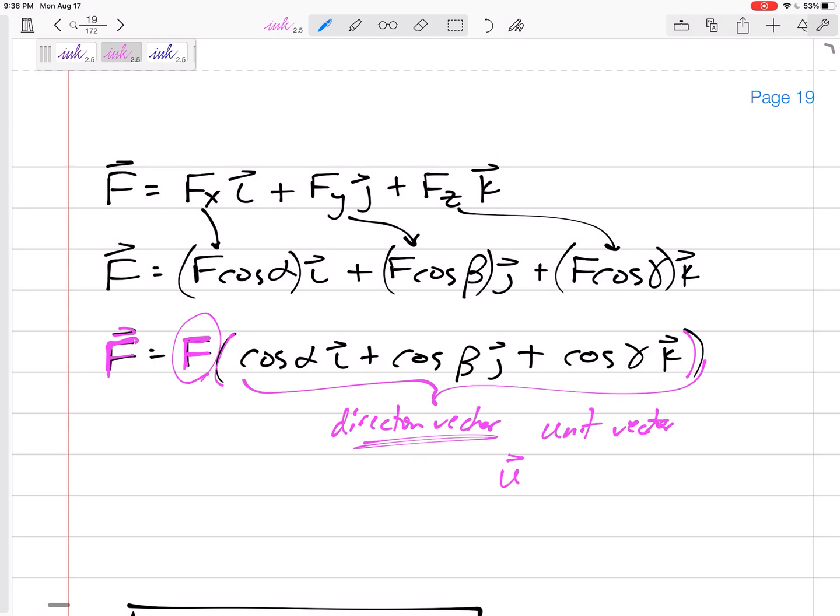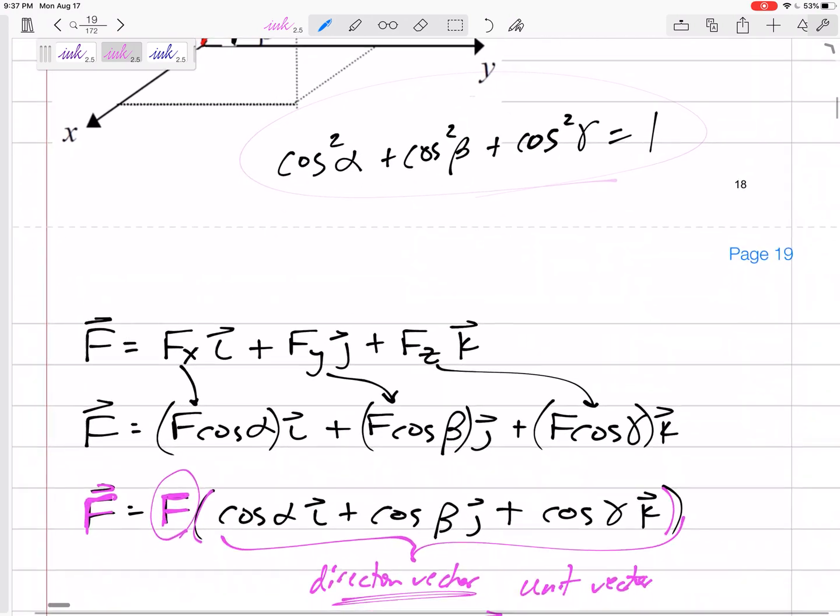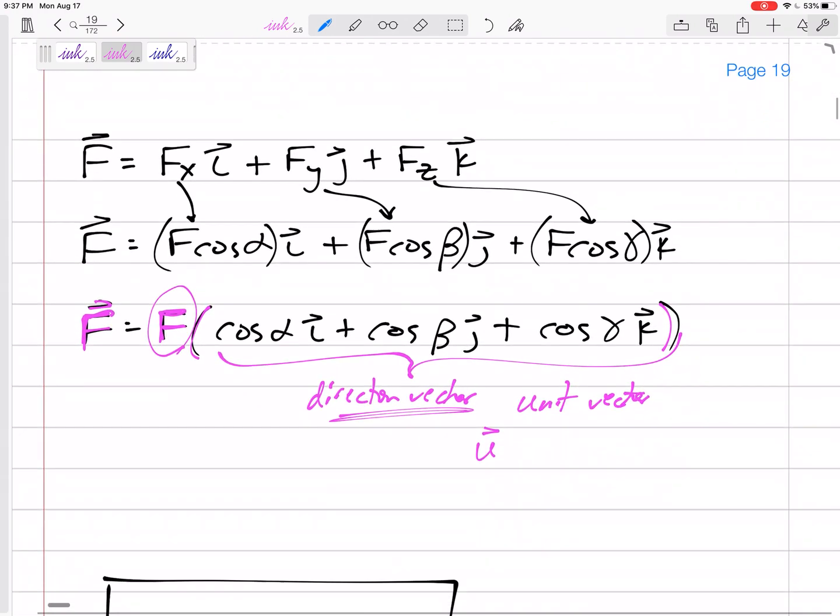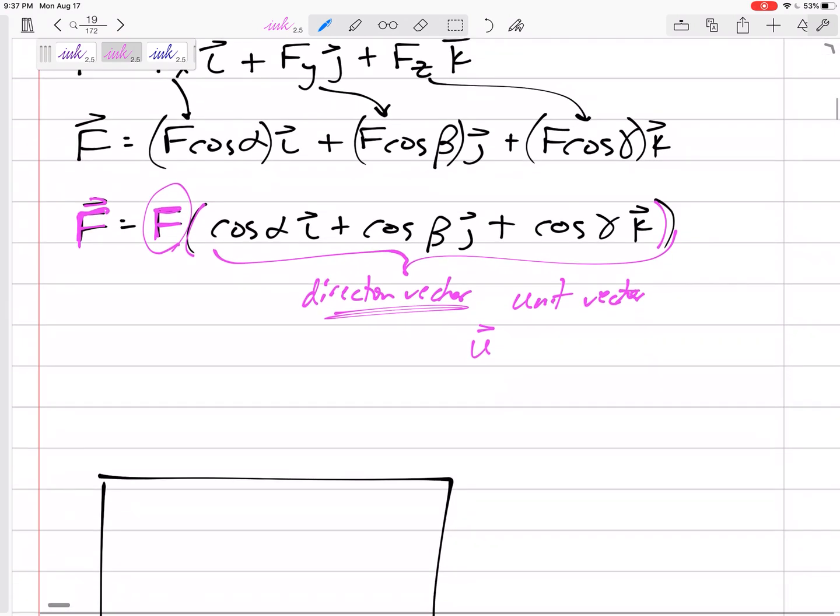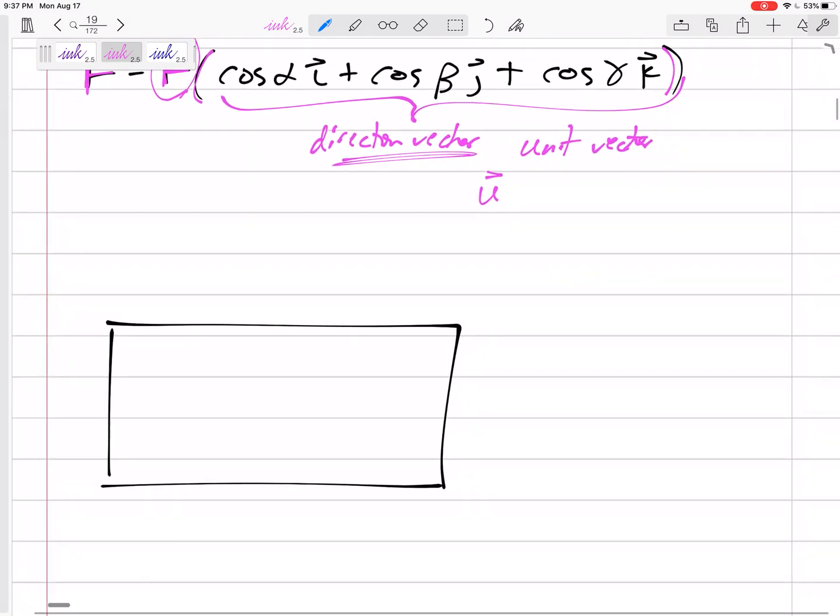u is cosine alpha i plus cosine beta j plus cosine gamma k. Does it make sense? You know what a unit vector is - a unit vector has a magnitude of one. Does that have a magnitude of one? Yes, all the cosine squareds sum up to one, right? So yes, it has a magnitude of one and it is unitless. That just tells you the direction.